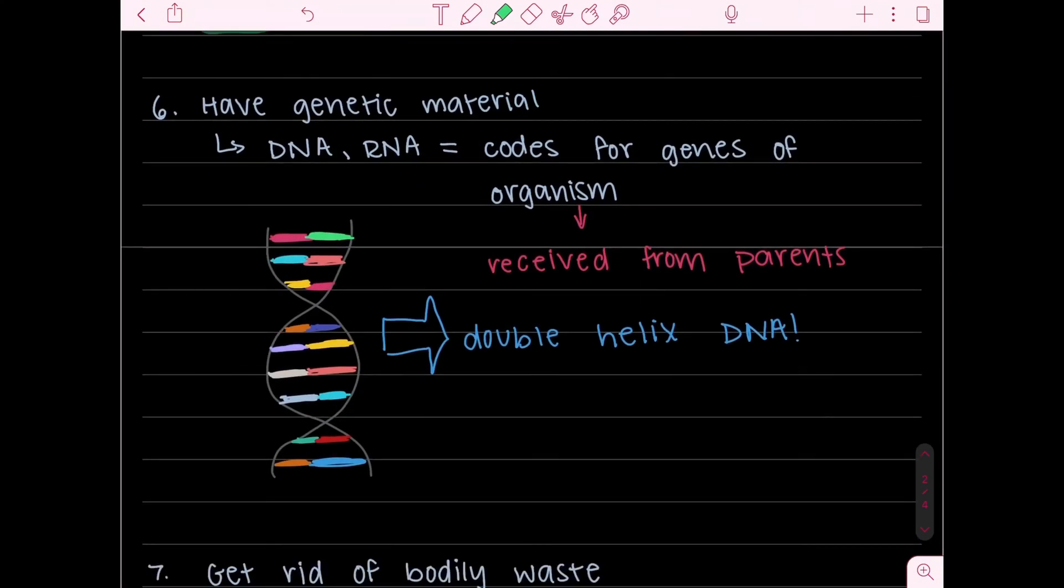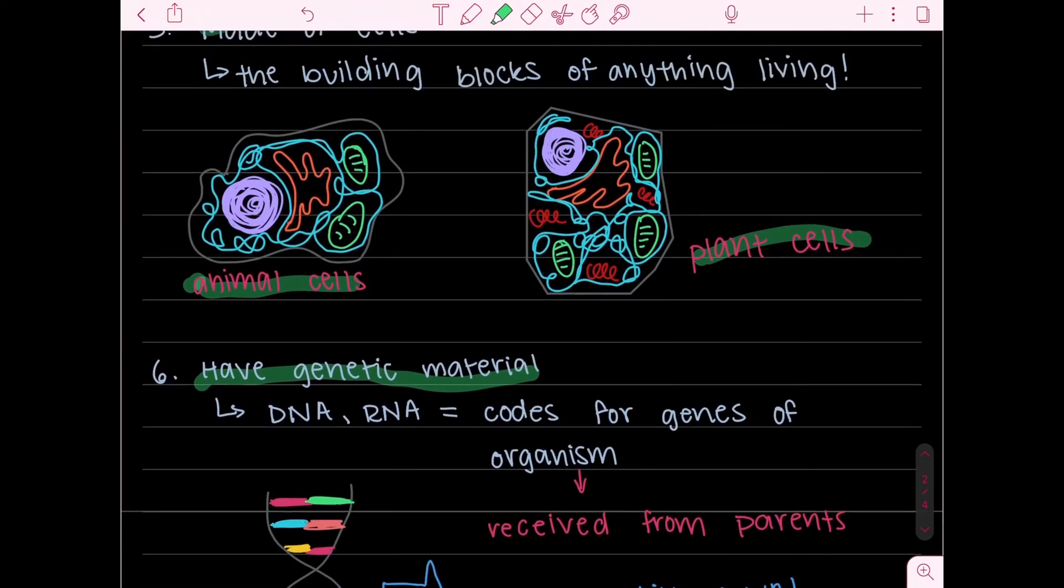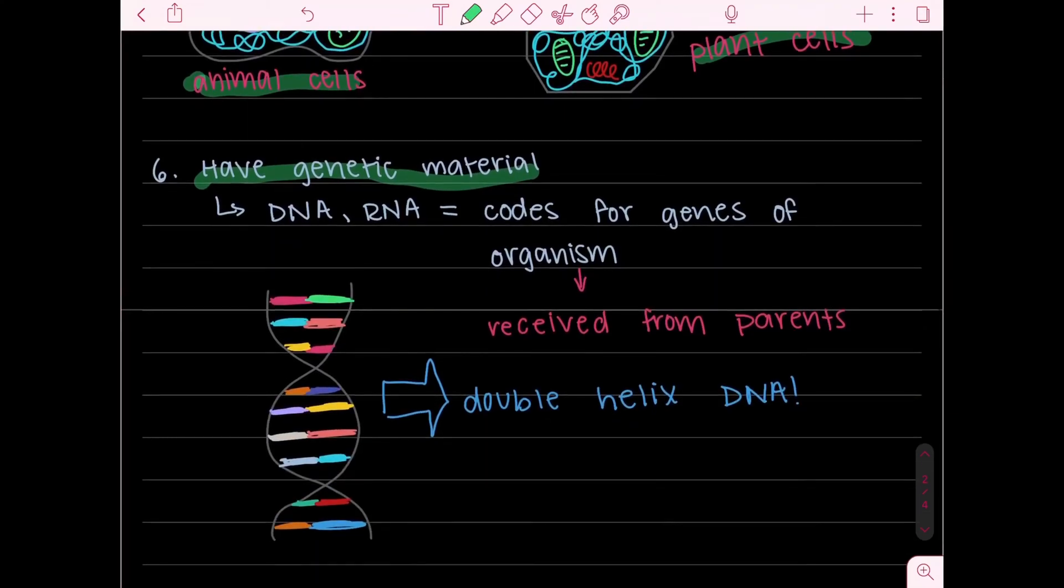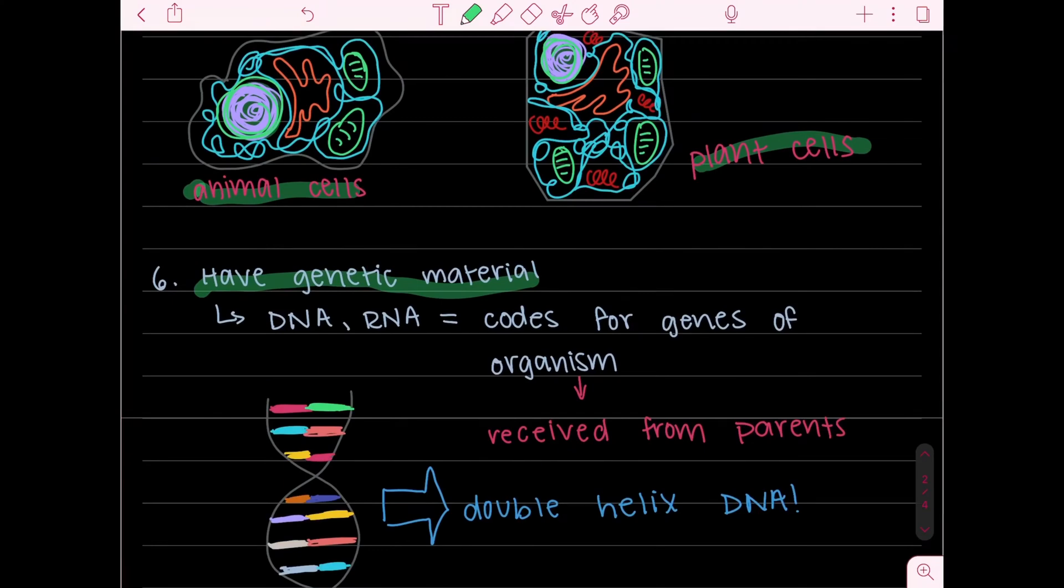Okay the sixth characteristic is that the organism must have genetic material. So as I mentioned before the nucleus contains, I don't know if you can see what I just highlighted, but the nucleus contains genetic material. So in order first for an organism to have genetic material it must be made of cells.